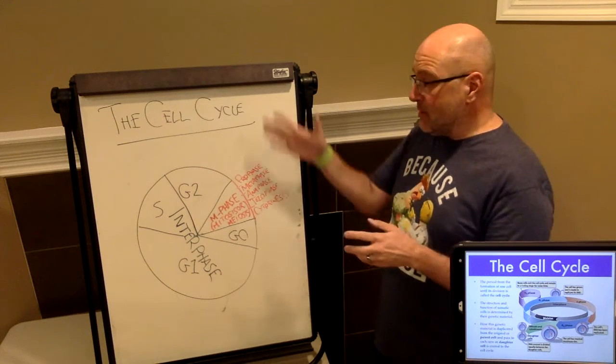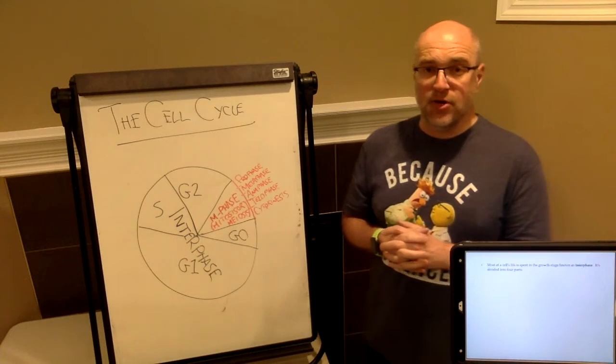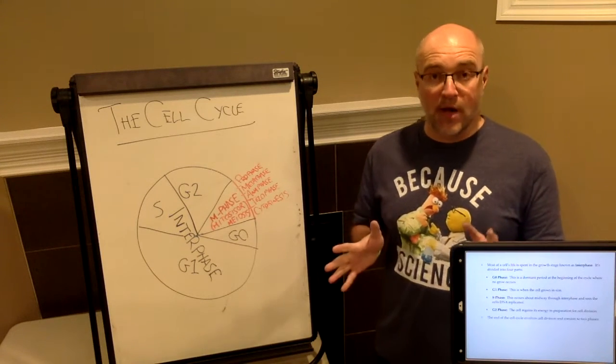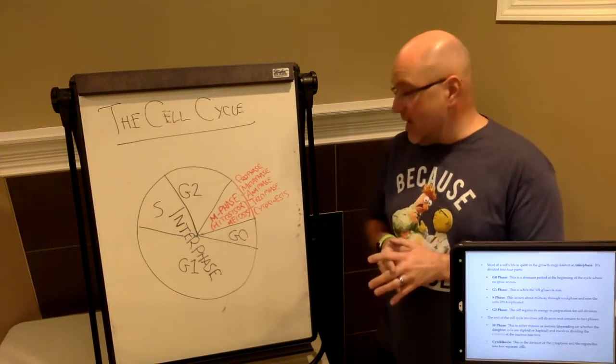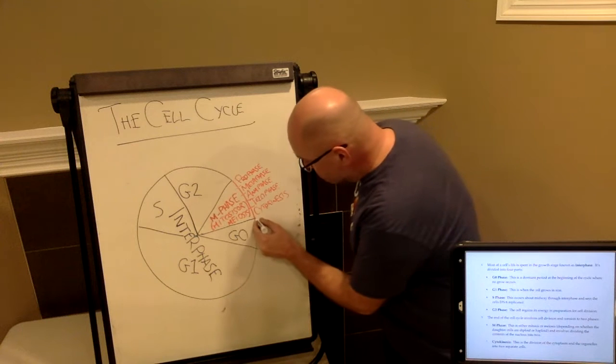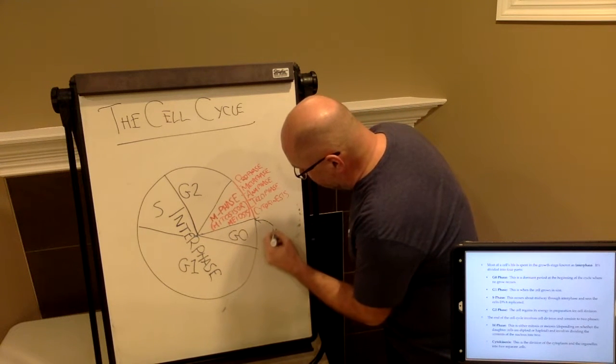So beside me here, I've got the cell cycle drawn out. You've got it here in the notes as well. And I'll just quickly run through the cell cycle, starting with the point at which the cell has just divided. So the point where the cell has just finished dividing is right here. This is the cell has divided here.